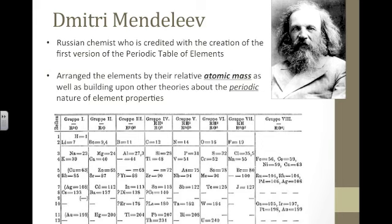Dmitry Mendeleev was the chemist who is credited with coming up with this first periodic table. We see a picture of it down here. This is a version of his periodic table.